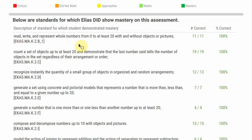So for example, read, write, and represent whole numbers from 0 to at least 20 with and without objects or pictures. The student got 11 out of 11 right, so this percentage was a hundred percent.